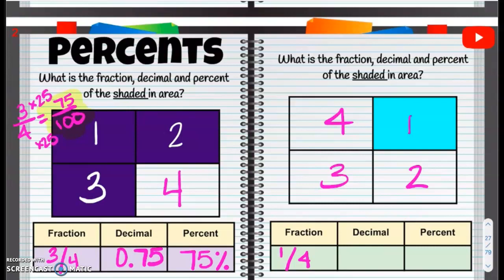Our decimal. So if we have one out of four, remember to get to 100, we're going to multiply by 25. One times 25 is going to be 25. So our decimal is going to be 0.25, zero and twenty-five hundredths. And our percent is going to be 25%. That is it for this one.